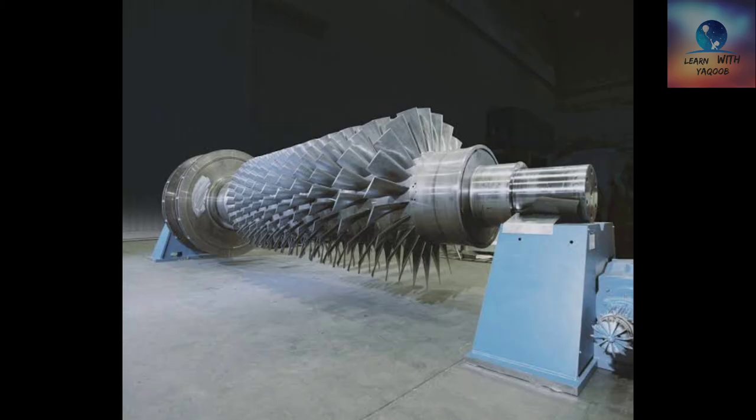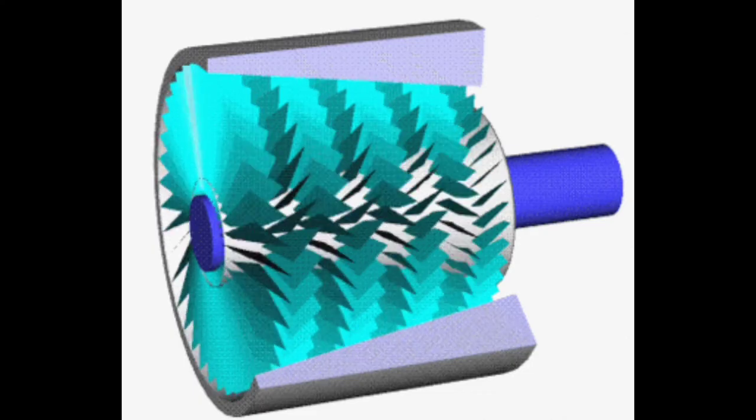As with centrifugal units, axial compressors increase pressure by first increasing the velocity of the gas. Axial compressors then slow the gas down by passing it through curved fixed blades, which increases its pressure.